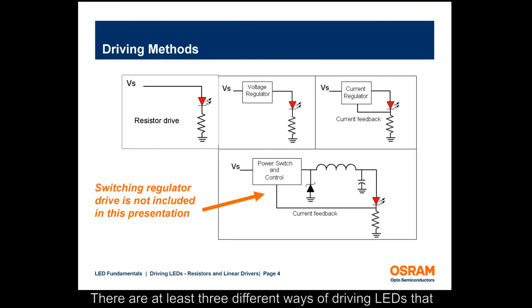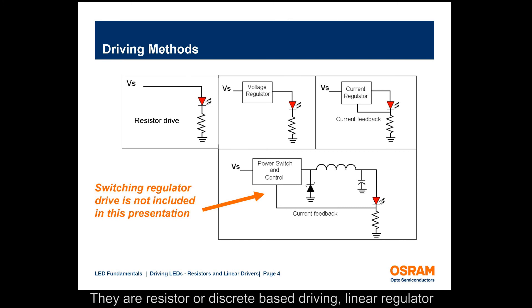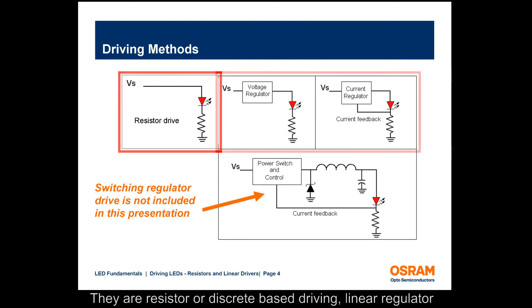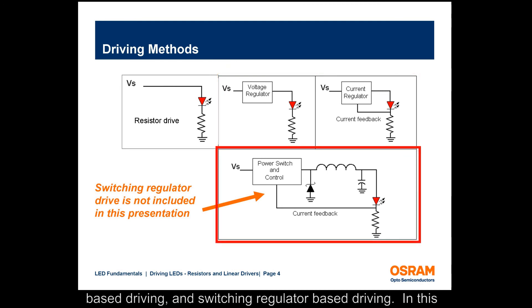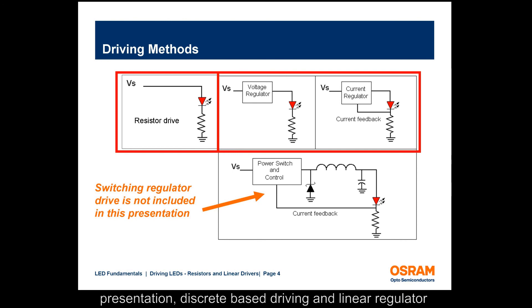There are at least three different ways of driving LEDs that can provide constant current to LED circuits and systems. They are resistor or discrete based driving, linear regulator based driving, and switching regulator based driving. In this presentation, discrete based driving and linear regulator based driving are examined.